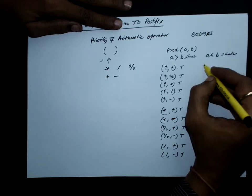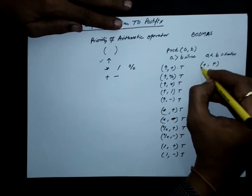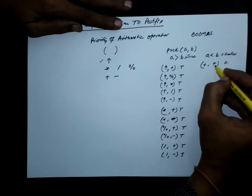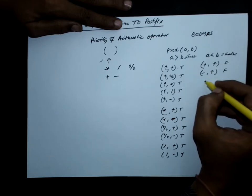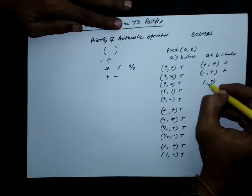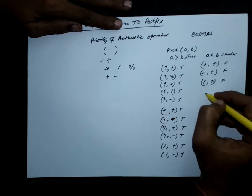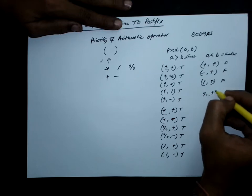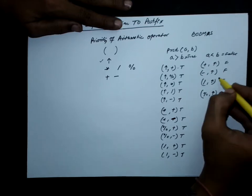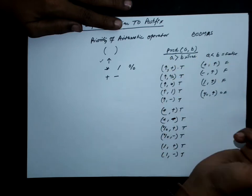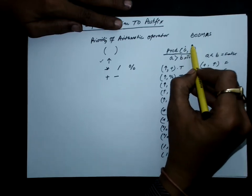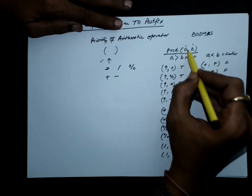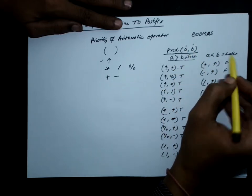Now if we check the precedence of plus over exponent, this will be false, because plus is of lower priority and exponent is of higher priority. Minus over exponent is also false. Division over exponent is also false. And modulus over exponent is also false. So the PRCD function returns true or false based on whether the first operator has higher precedence than the second.